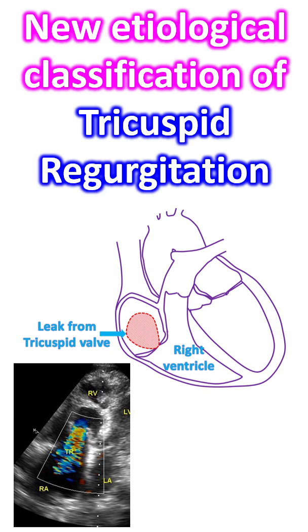Secondary TR is divided into atrial secondary tricuspid regurgitation and ventricular secondary tricuspid regurgitation, just as in the case of mitral regurgitation. TR associated with cardiac implantable electronic device leads has been divided into type A, where the lead is causing TR, and type B, in which the CIED lead is just an incidental finding.